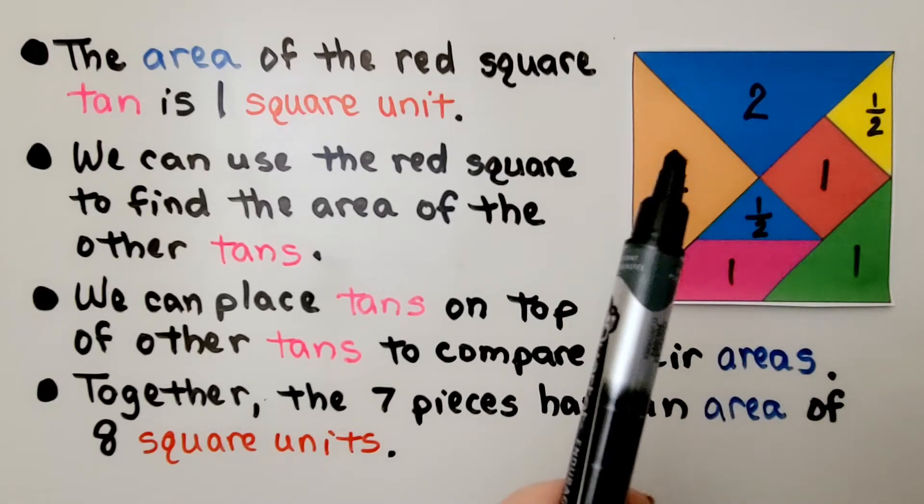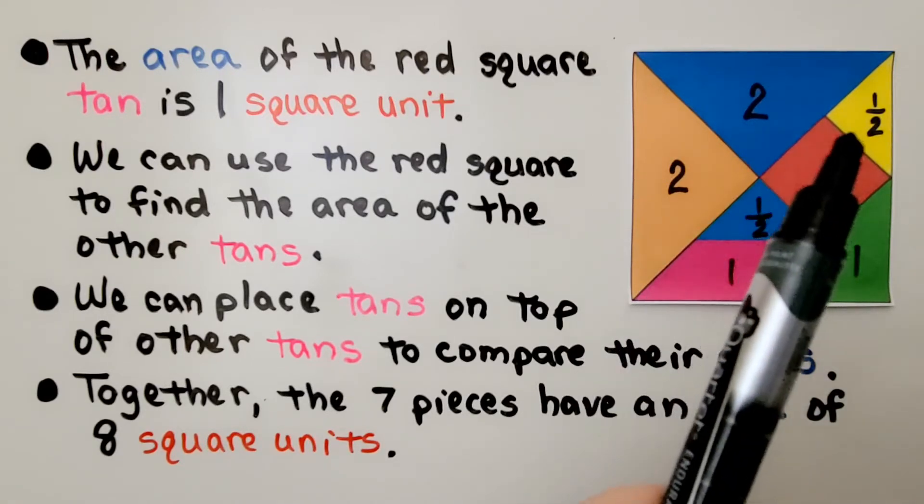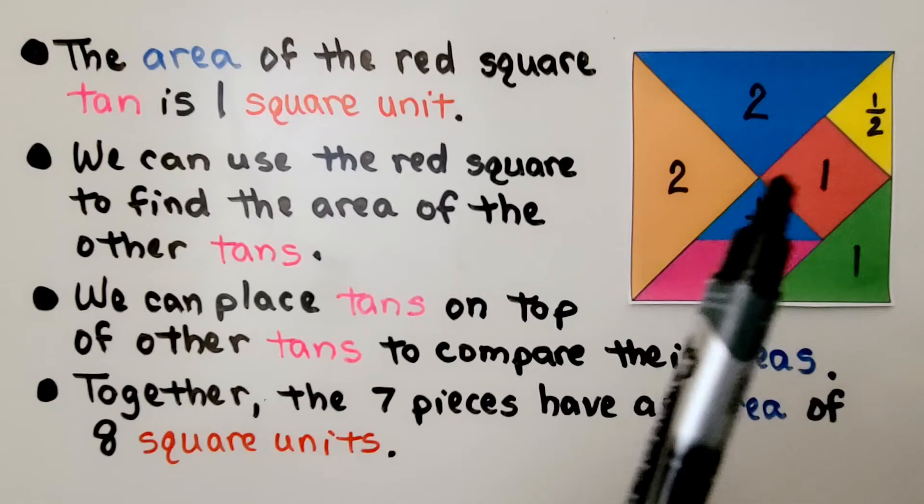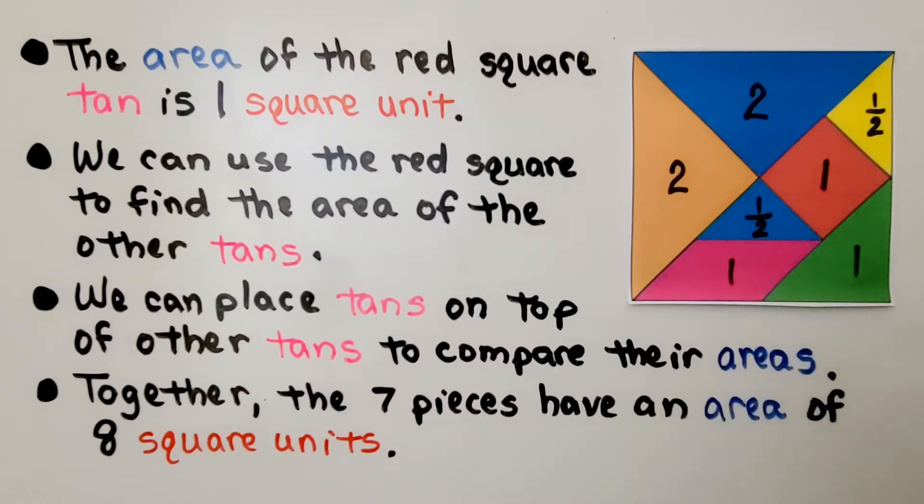Together, the seven pieces have an area of eight square units. We have two and two is four, and we have a half and a half. That would be five, six, seven, eight units.